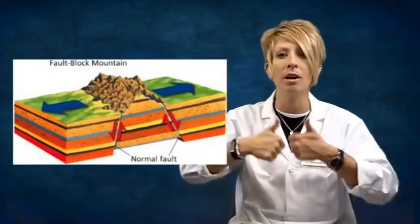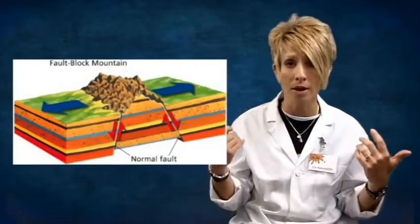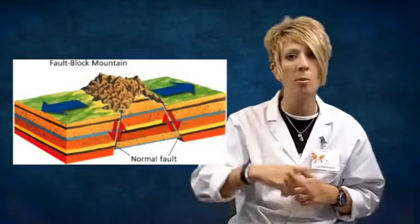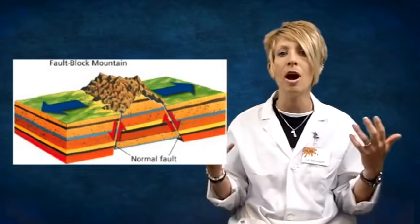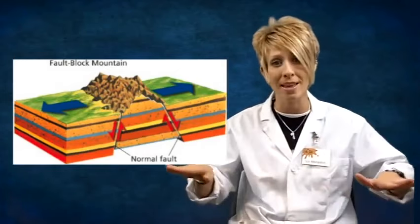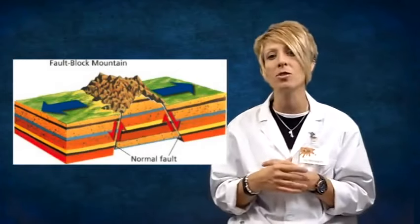Now these faults, these cracks in the earth, can build mountains. When a normal fault uplifts a block of rock, we call it a fault-block mountain. When two normal faults form and they're parallel to one another, what ends up happening is that a block of rock is left lying between them.